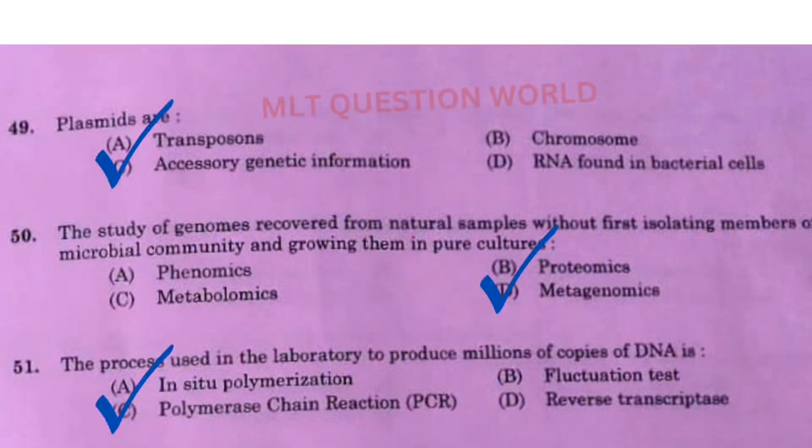Next question: Plasmids are? The right answer is option C, accessory genetic information. Next one: The study of genomes recovered from natural samples without first isolating members of the microbial community and growing them in pure cultures — the right answer is option D, metagenomics.